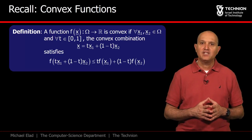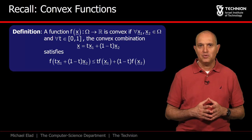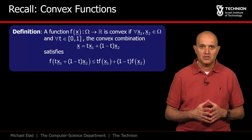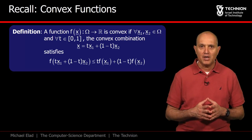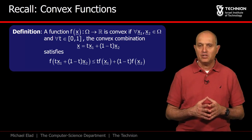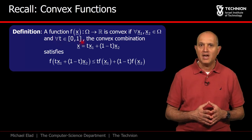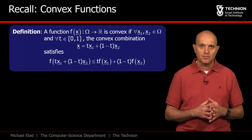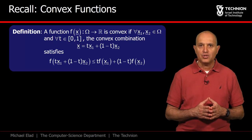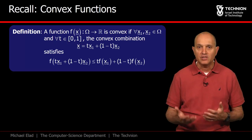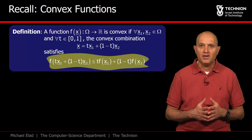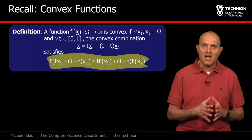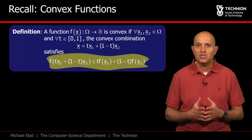We move now to define convexity of functions. We choose any two points x1 and x2 in the domain omega and define the line stretched between them parameterized by t in the range 0 to 1. A point on this line is x of t. If the value of the function along this line, f of x of t, is upper bounded by a similarly weighted average of f of x1 and f of x2, the function is convex.